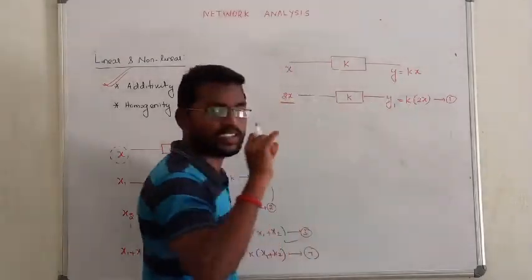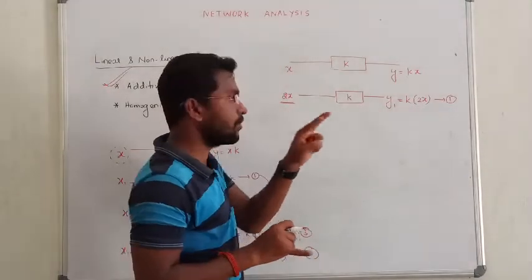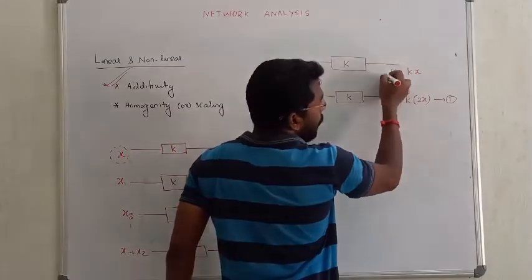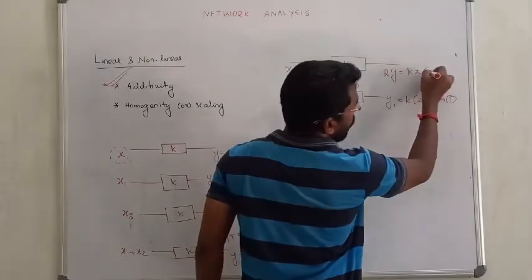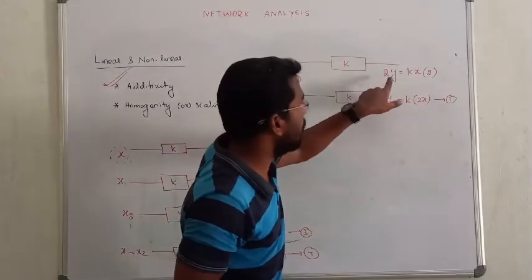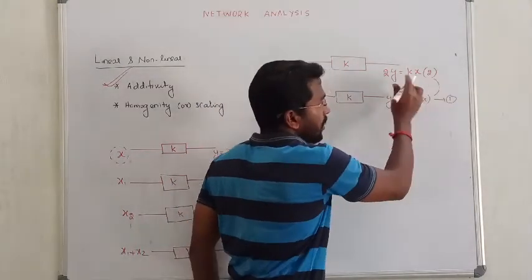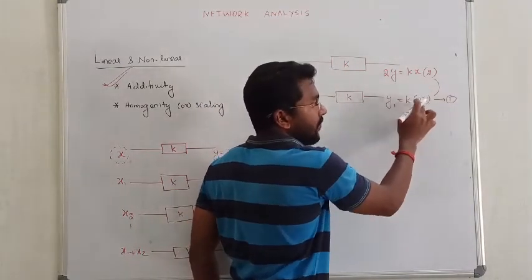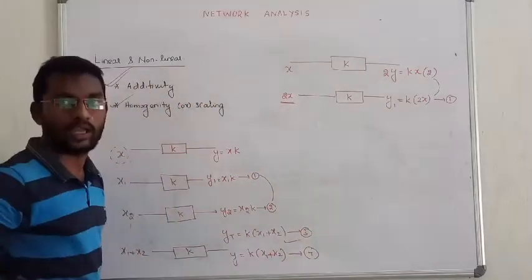That is the case number 1. So change the input signal. Input signal 2x, case number 2, go to the output. Output 2x. Input changes, output equation 2x. RHS, the system satisfies the principle of homogeneity. So one system additively satisfied.